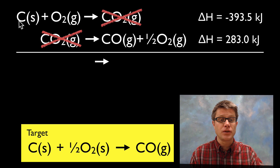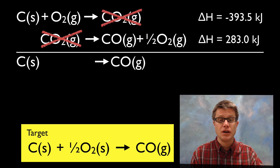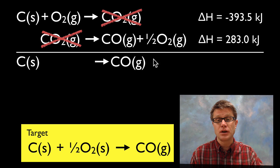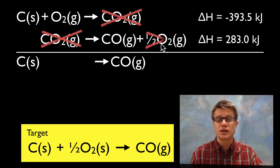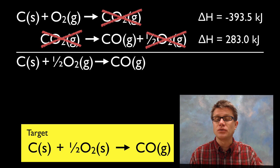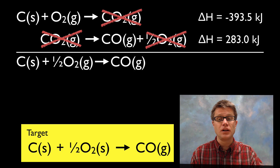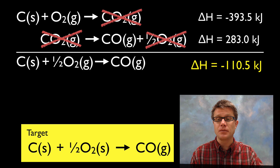I can move my carbon and carbon monoxide, and I'm left with my oxygens. On the left side I have one O₂ and on the right side I have a half O₂. What I'm looking for is a half O₂ on the left side, so I can cross one off and I'm just left with a half O₂ on the left. Now I've got my target reaction. All I do is simply add these up algebraically, and that gives me the delta H of the whole reaction.